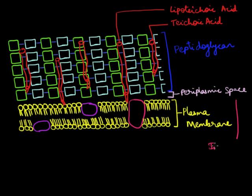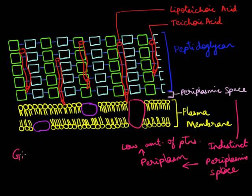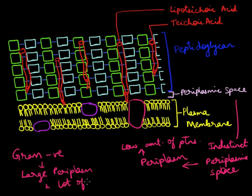The Gram positive cell wall has an indistinct periplasmic space, which is filled with something called a periplasm. This periplasm has a relatively small number of proteins compared to a Gram negative bacteria, where the periplasm is quite large with many proteins. To compensate for this lack of proteins, the Gram positive bacteria secretes enzymes called exoenzymes.